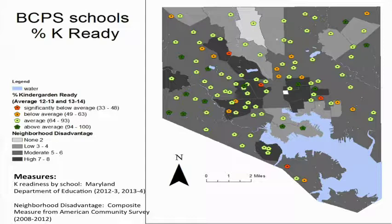We also have data on children entering school ready to learn — kindergarten assessments overlaid by neighborhood disadvantage. You can see the inner city faring worse with higher disadvantage. But interestingly, you see some red stars that are most significantly below average, and also some green stars near the same community. The green stars are where we found home visiting programs are — nurse practitioners targeted at disadvantaged communities. This shows some advantages: some children are entering school more ready to learn than other neighborhoods because of these very effective outreach and community-based workers.